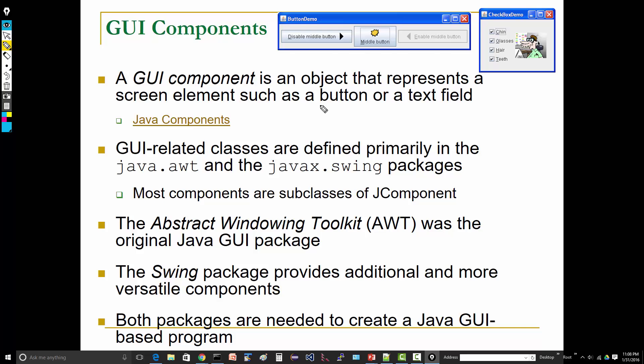Simply stated, a GUI component is an object that represents a user interface item, a screen element: a button, a text field, a radio button, a checkbox. The Java Swing toolkit is fully featured. There's a large variety of components or widgets available for your use.